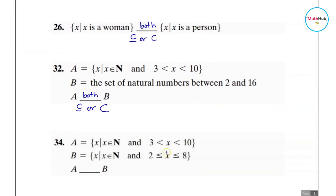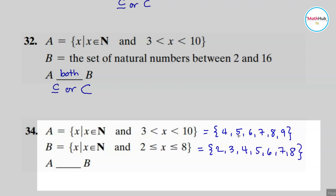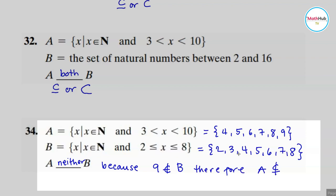For number 34, is A a subset of B? Here A is the set of all real numbers between 3 and 10, so that includes numbers like 4, 5, 6, 7, 8, 9. Set B covers numbers 2 through 8. Notice that 9 is in A but cannot be found in B, so set A is not a subset of B at all. The answer is neither, because 9 is not an element of B.